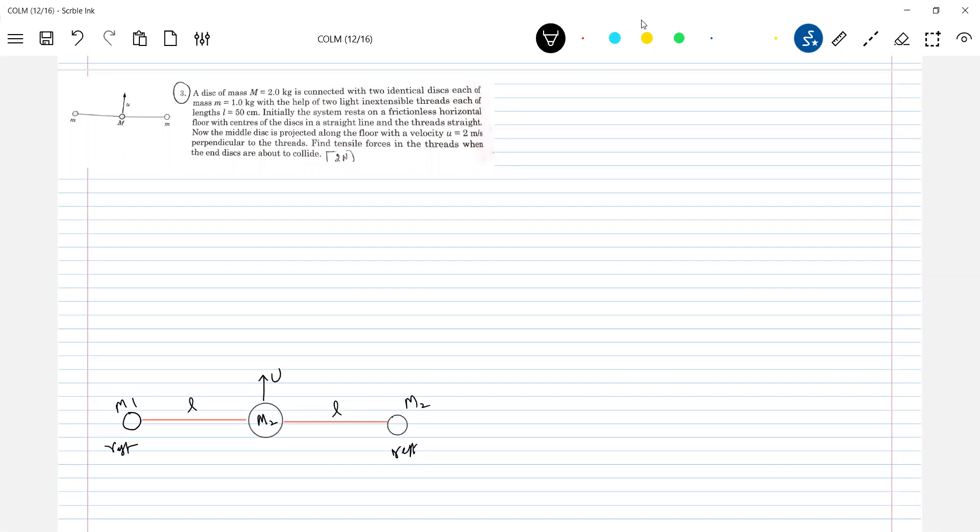So how will the weight act? Weight will act perpendicular to the plane of paper, not vertically down. Please understand the situation very clearly. Find the tensile force in the threads when the end disks are about to collide. When both m1 and m2, when the disk A and B are about to collide, he is asking what should be the tension in the string.